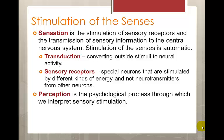Perception is the psychological process through which we interpret our sensory stimulation. Later in this section, when we start looking at trick photographs, visual representations of things, and optical illusions, your brain will flip those things back and forth because it can see them two or three different ways. That's perception — how are you perceiving that object?